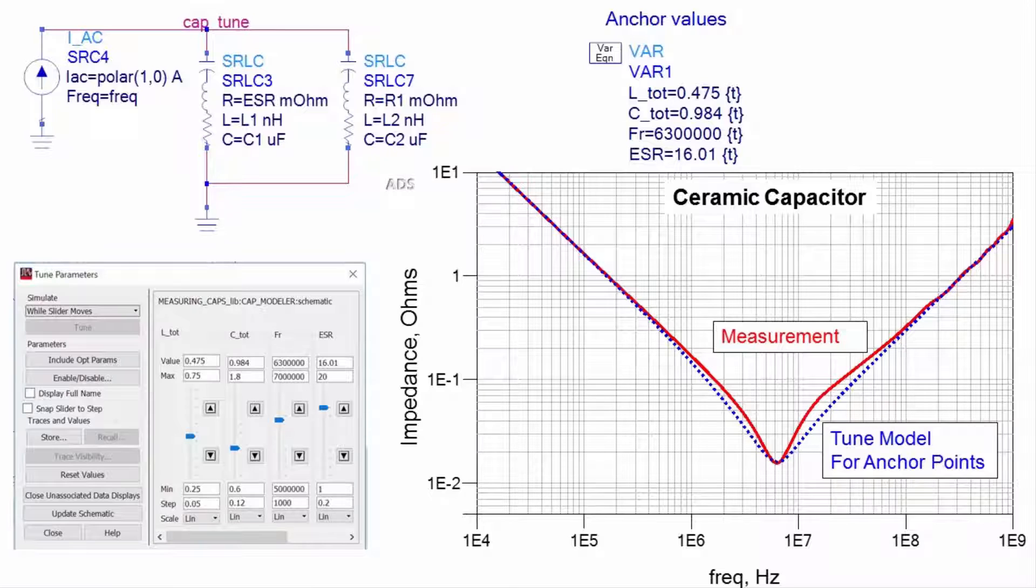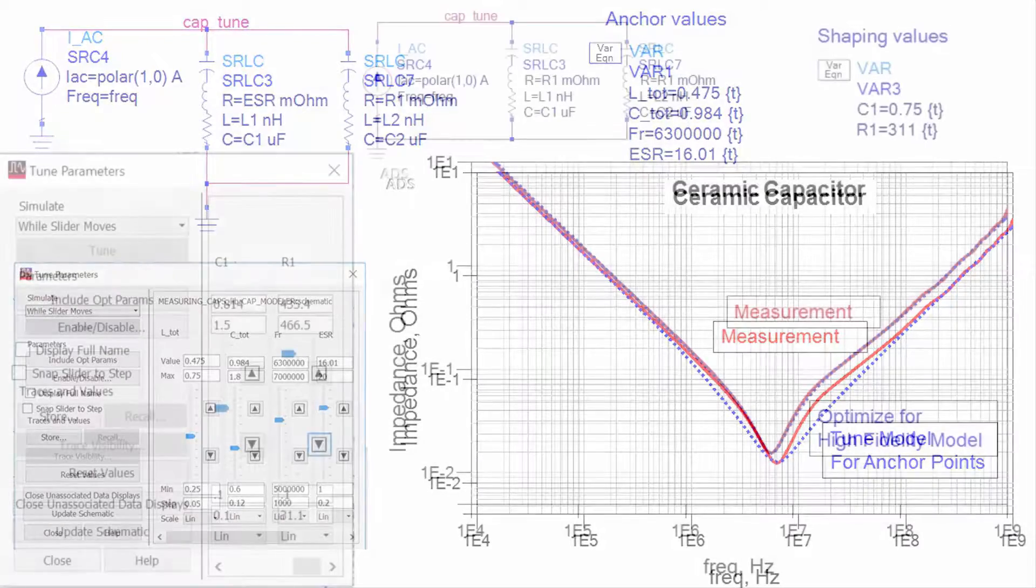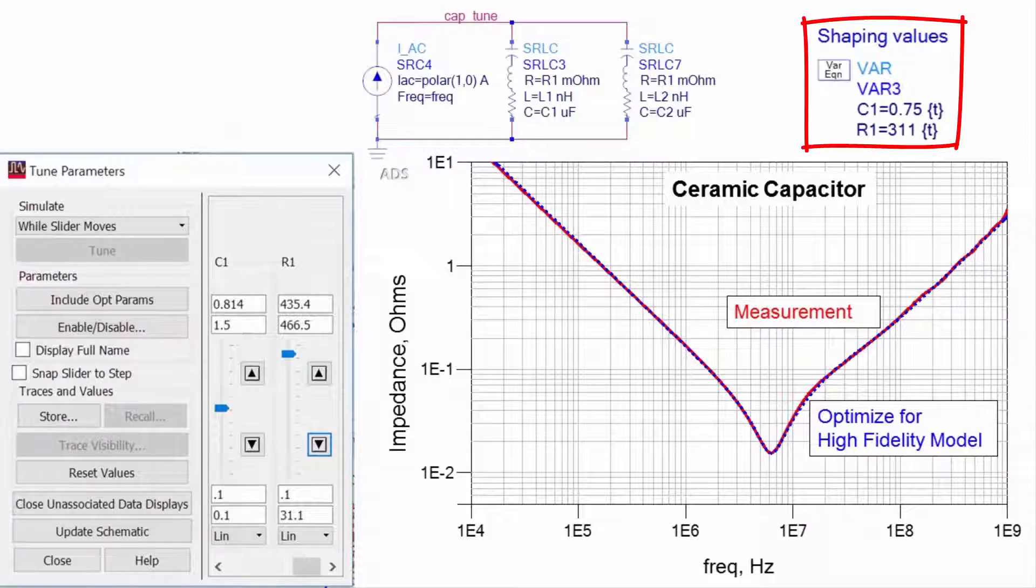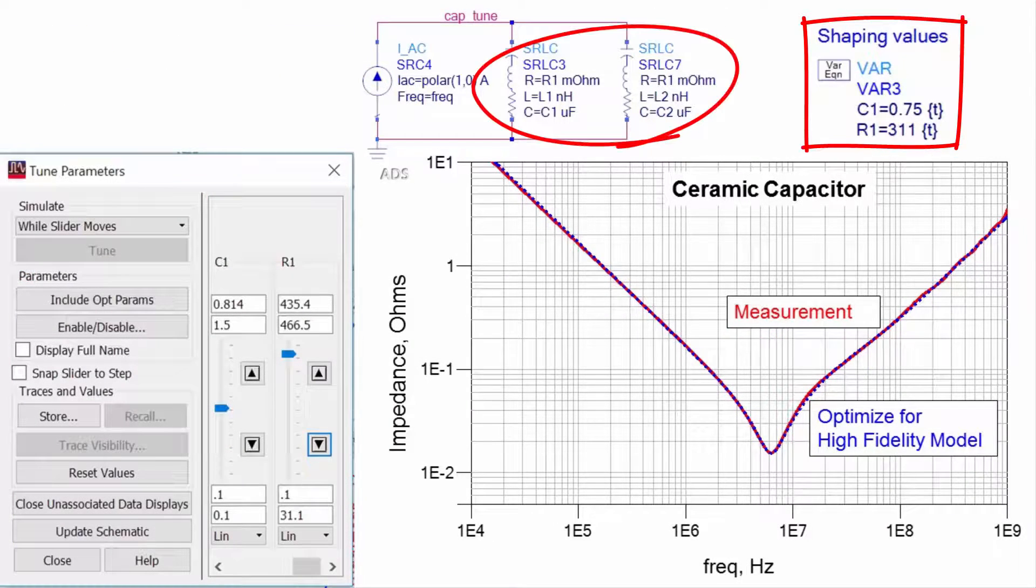The capacitor measurement is included in the display so that both the measurement and the model results can be overlaid. Two shaping values are then adjusted for a nearly perfect fit.